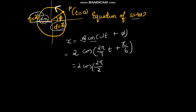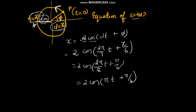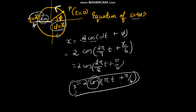Substituting the values: the equation becomes x = 2 cos(πt + π/6). This is the equation of motion. If the clockwise arrow is given, use sine instead of cosine. If they ask for the displacement at 5 seconds, substitute t = 5; if at 7 seconds, substitute t = 7 in this equation.